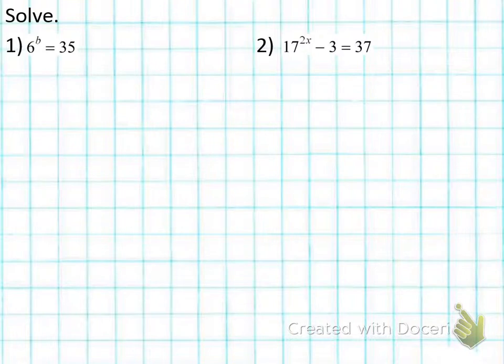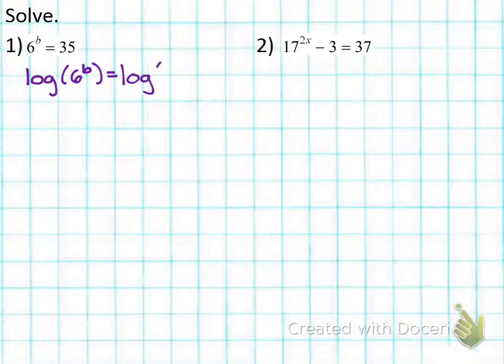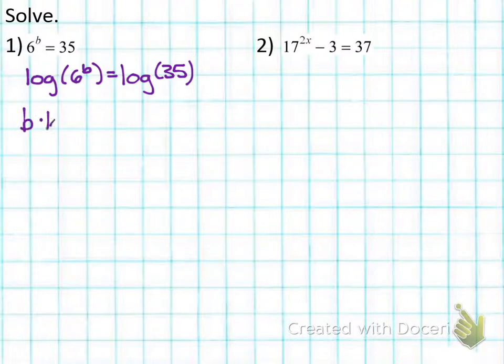Here are our first two examples. For the first one, we have 6 to the b equals 35. The exponential term is already isolated, so I'll move on to the next step, which is to take a common log of both sides. That looks like this — I put each side in parentheses and take the log of both sides, giving me log of 6 to the b equals log of 35. I can apply the power property to pull the exponent down in front, giving me b times log of 6 equals log 35.